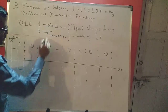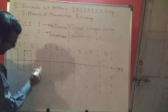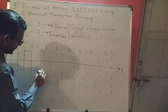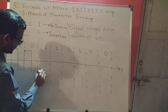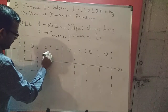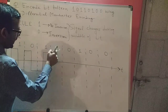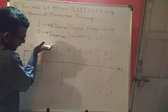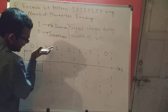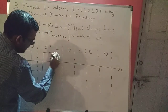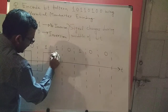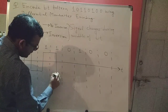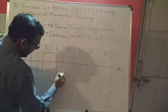One represents no inversion. So if I'm below the time axis I'll remain below the time axis. Now I'm at the middle of the bit, so I'll go back up and proceed. Again one represents no inversion, so if I'm above the time axis I'll remain above the time axis and proceed. I'm at the middle of the bit now — I'll change and here I am.